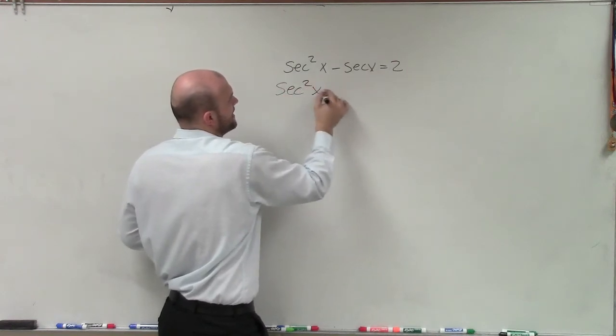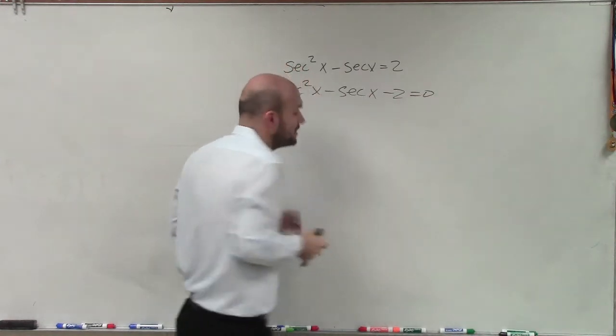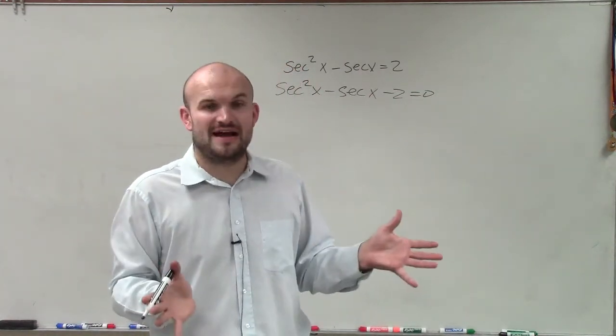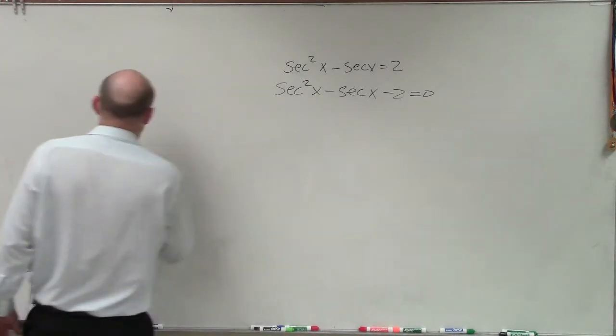So if I have secant squared of x minus secant of x minus 2 equals 0. And it's really important to make sure that we set it equal to 0 when we apply our factoring. So therefore, we can apply the 0 product property.